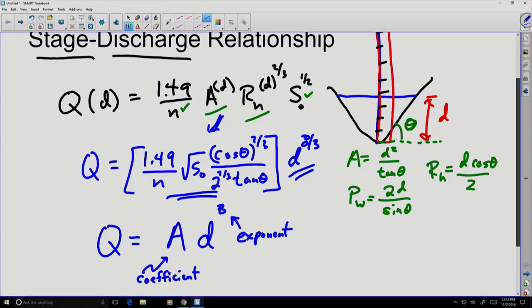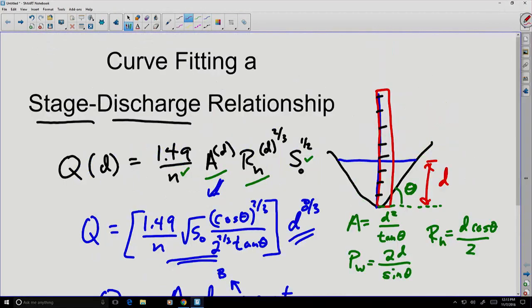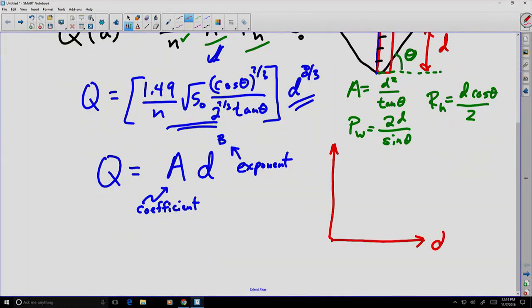And notice we could plot that relationship by plotting the stage on the x-axis and plotting the flow or the discharge on the y-axis. And we would get some sort of version of something that looks like a parabolic equation, but the steepness of that slope would depend on that exponent.